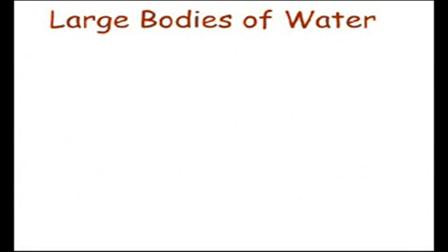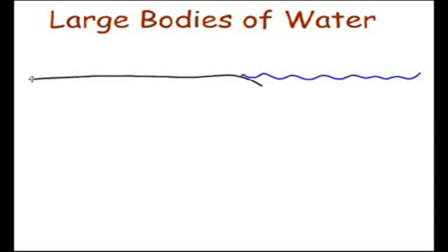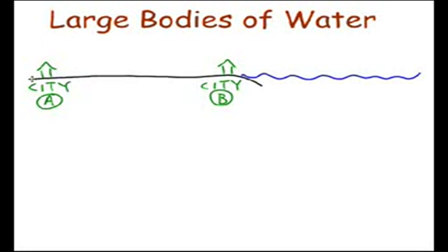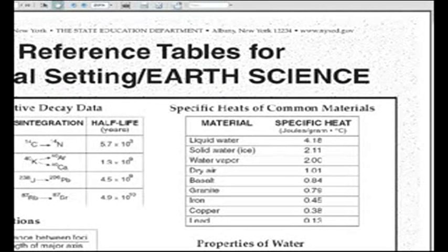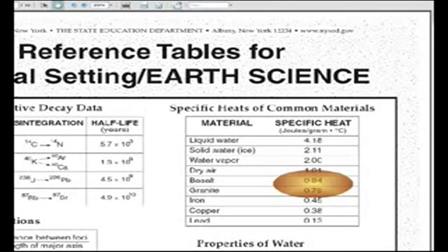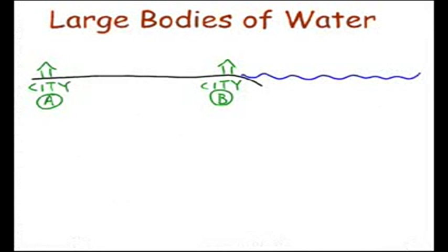Imagine we have two locations, two cities. Here is the land, and here is the large body of water. Some places are inland cities — really far away, like Nebraska or Kansas. That's City A. And we'll have City B, which is right on the water, like Washington D.C. or Miami. One is an inland location, City A; the other is a coastal city, City B. Because of water's high specific heat, it takes longer for water to heat up, and also longer for it to cool down. Liquid water has a specific heat of over four joules per gram, whereas land — made of rock like basalt and granite — has a specific heat of less than one joule per gram. So that land is going to heat up a lot faster than the water.